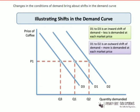When a demand curve slopes down from left to right, this reflects the inverse relationship between price and quantity demanded. When the price goes up, the quantity demanded goes down, and when the price goes down, the quantity demanded goes up.